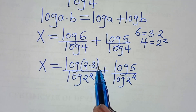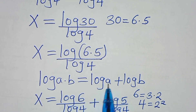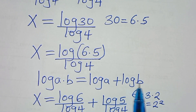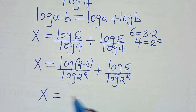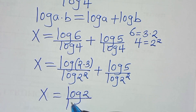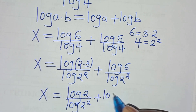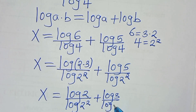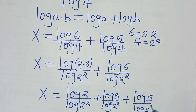Now log(2 times 3) is in the form of log(a times b), which we can express as log a plus log b. Therefore x equals log 2 divided by log(2²), plus log 3 divided by log(2²), plus log 5 divided by log(2²).